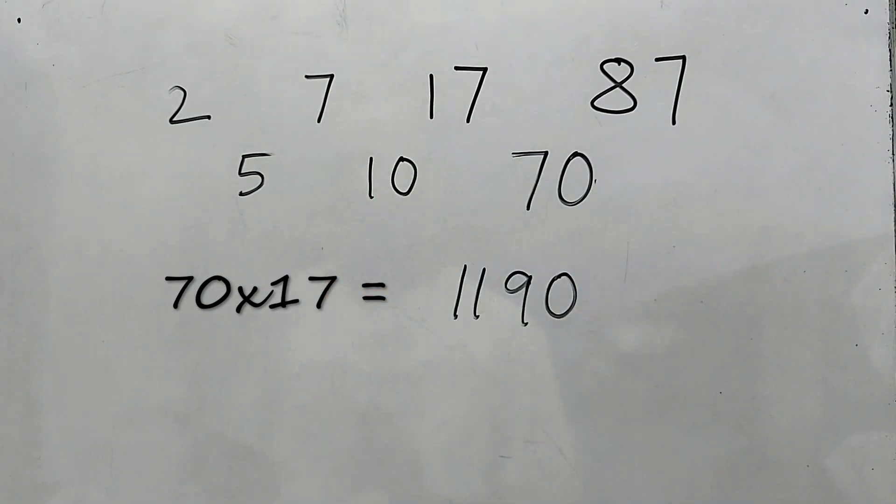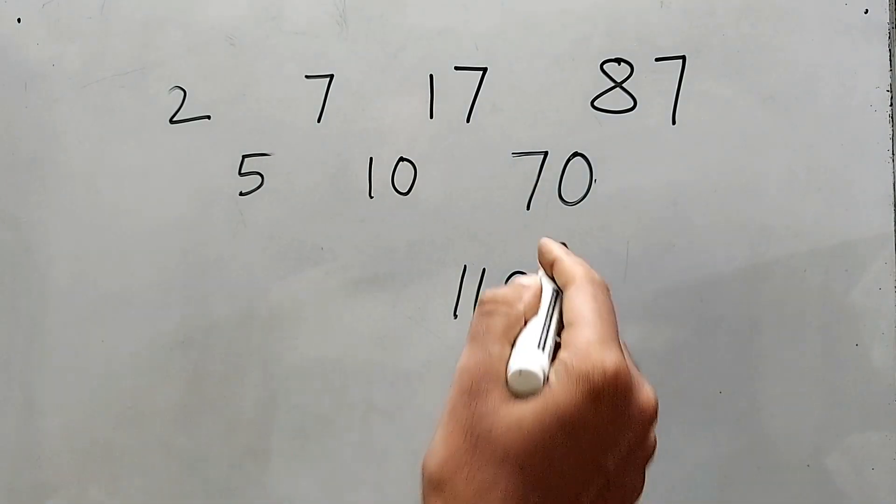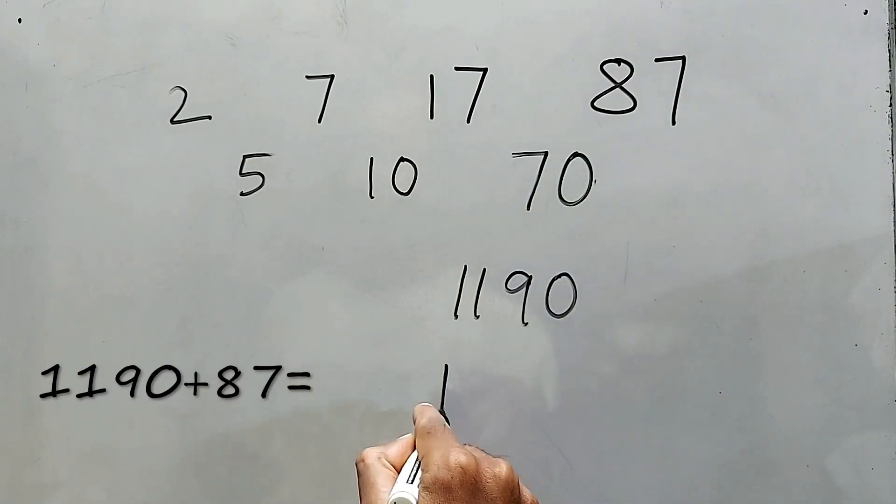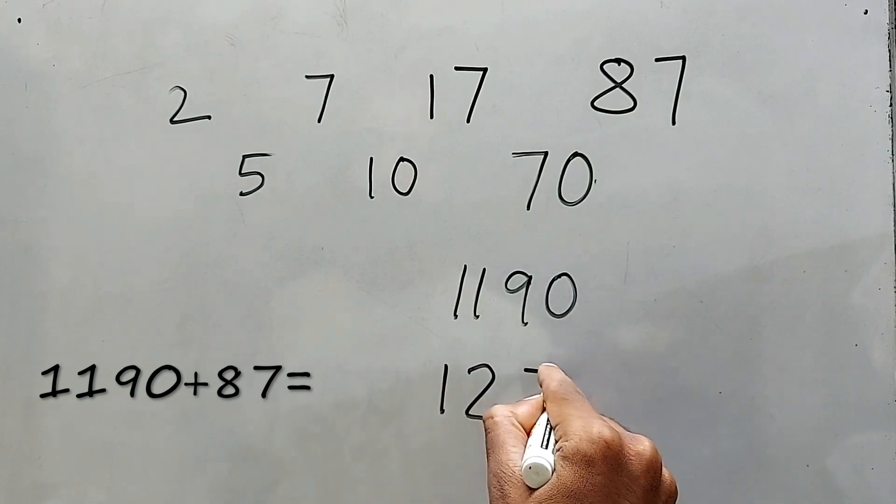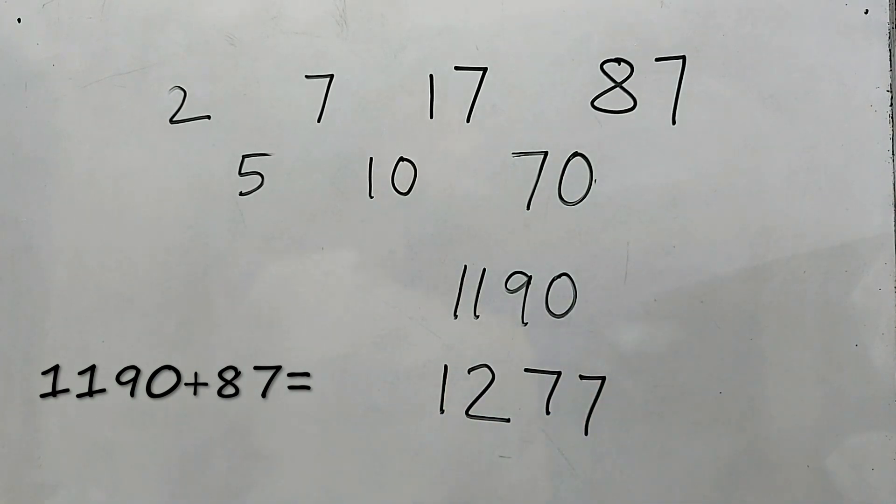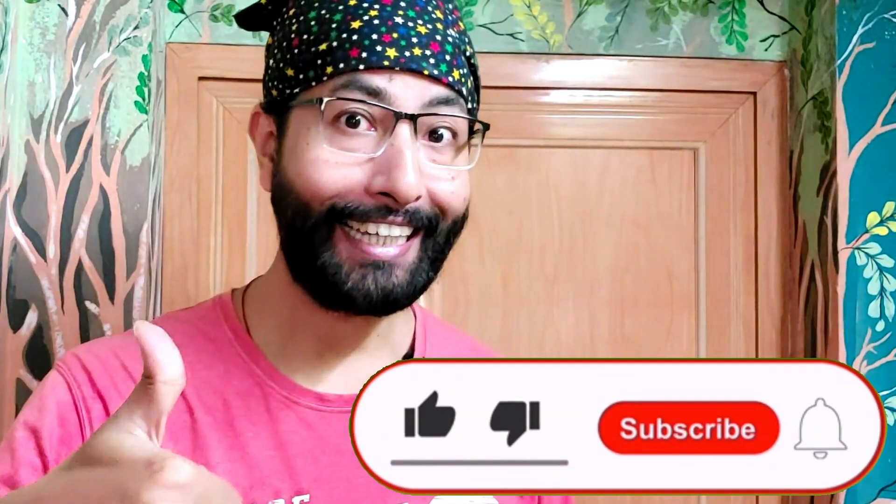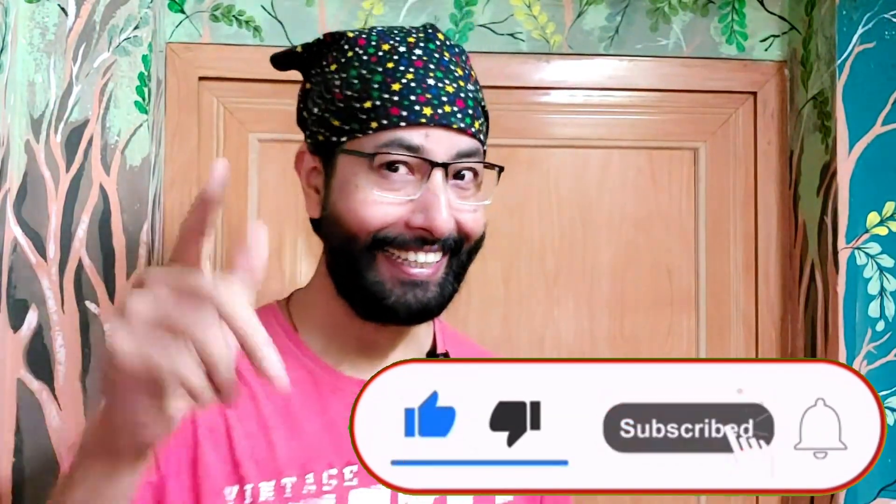90, right? 90 times 17 is 1190, plus 87 is 1277. This is your answer, my friend. Well, don't forget to like, share, and subscribe this channel. Catch you soon!